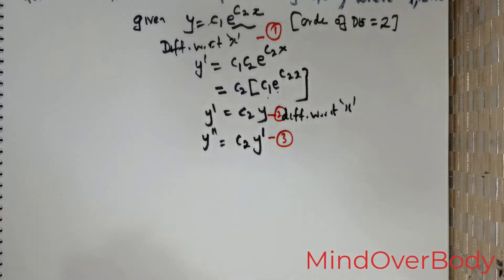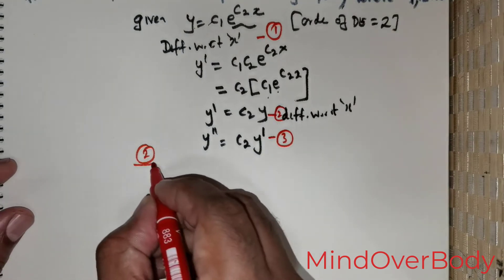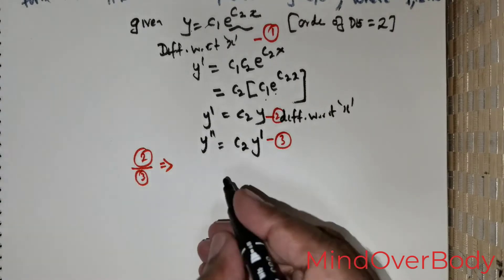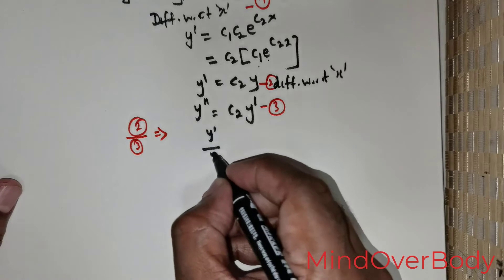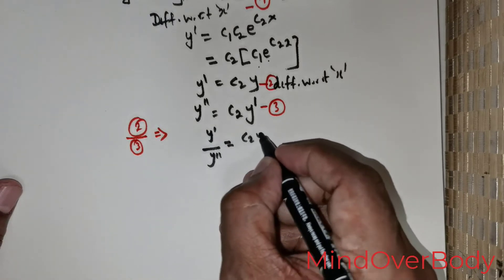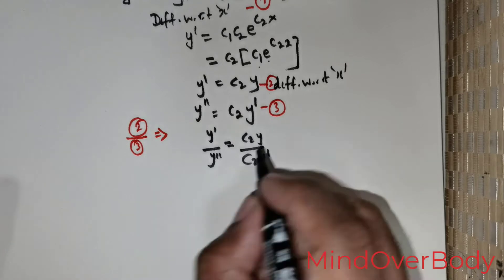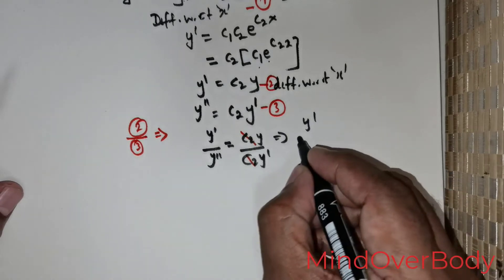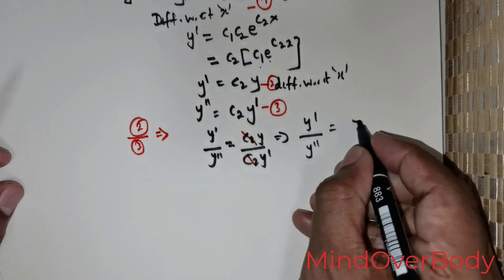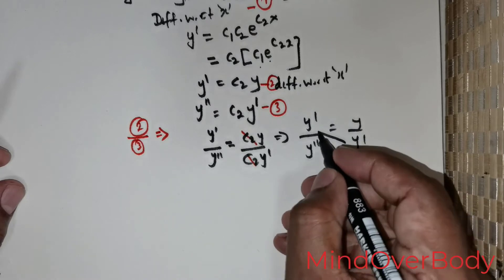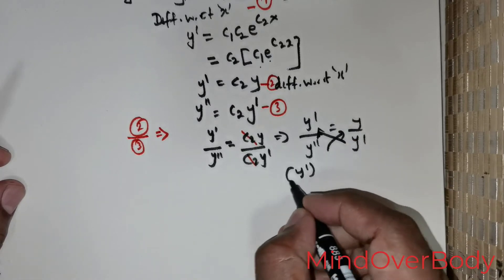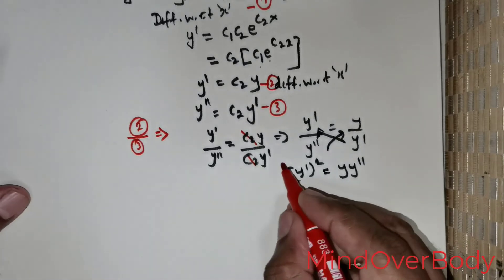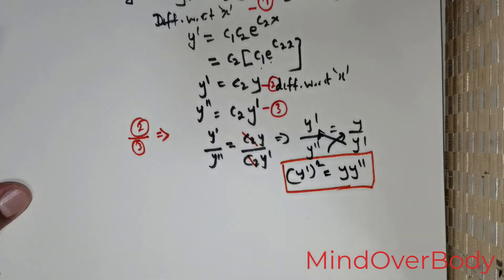Dividing equation 2 by equation 3: y'/y'' = c₂·y / c₂·y'. The c₂ terms cancel, giving y'/y'' = y/y'. Cross-multiplying: (y')² = y·y''. This is the final solution for this question.